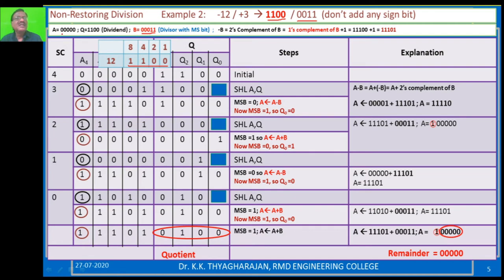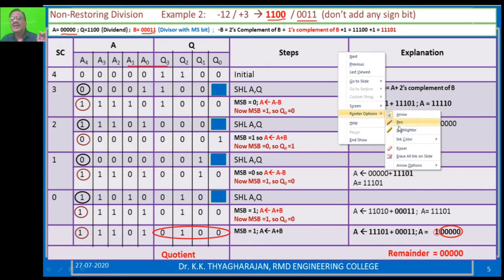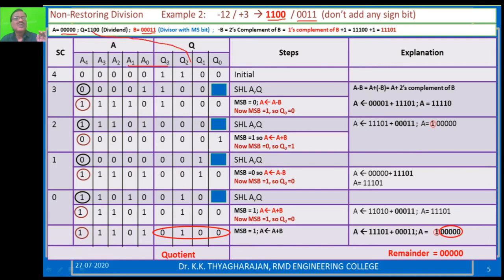Similarly, register A should be initialized with 0. A is initialized with five 0s. B is initialized with three 0s and then 1, 1 — so B stores 00011. Q is 12, that is 1100.